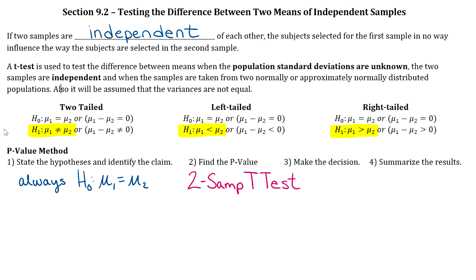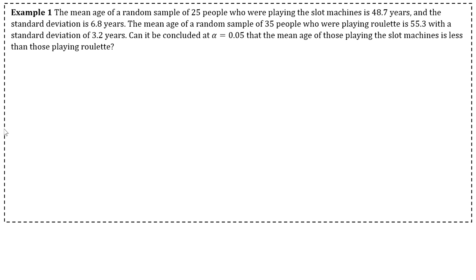Okay, so let's do our first example. So example one says that the mean age of a random sample of 25 people who are playing the slot machines is 48.7 years and the standard deviation is 6.8 years. The mean age of a random sample of 35 people who are playing roulette is 55.3 with a standard deviation of 3.2 years. Can it be concluded at alpha equals 0.05 that the mean age of those playing the slot machines is less than those playing roulette?